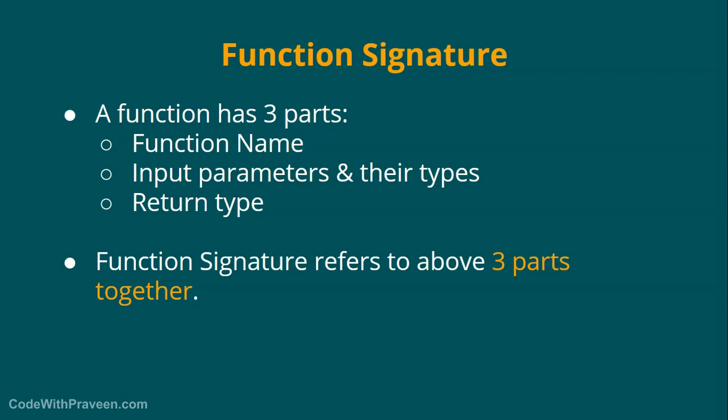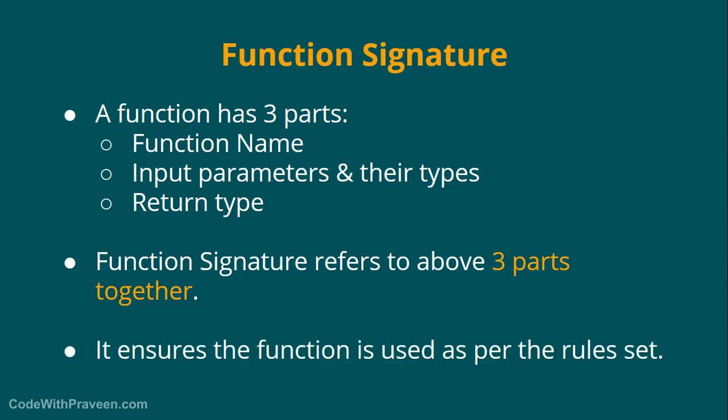All three parts together we refer to as the function signature. The main purpose of identifying it as a signature is that we make sure we follow it as per the defined rules. For example, in case of calculate age, we have mentioned it accepts an input parameter of type string and returns integer. So whenever we call this function, we make sure it accepts the parameter only of type string, and it returns only integer — not any other types such as float or string.